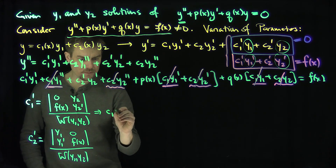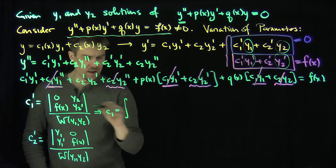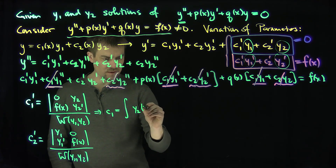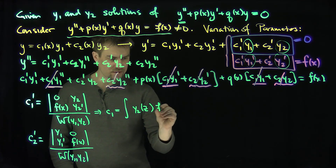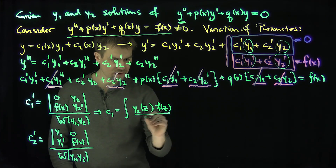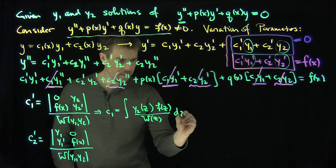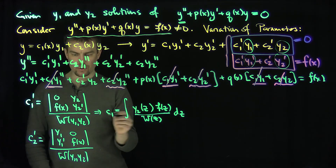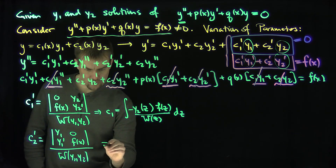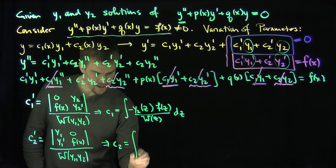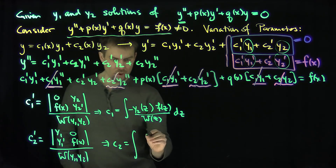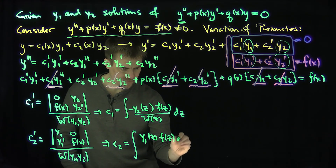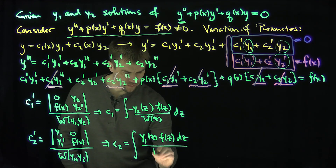From these, c1 is the antiderivative of negative y2 of z times f of z over the Wronskian of z, dz. And c2 is the antiderivative of y1 of z times f of z over the Wronskian of z, dz. The negative sign in c1 comes from the cross-determinant.